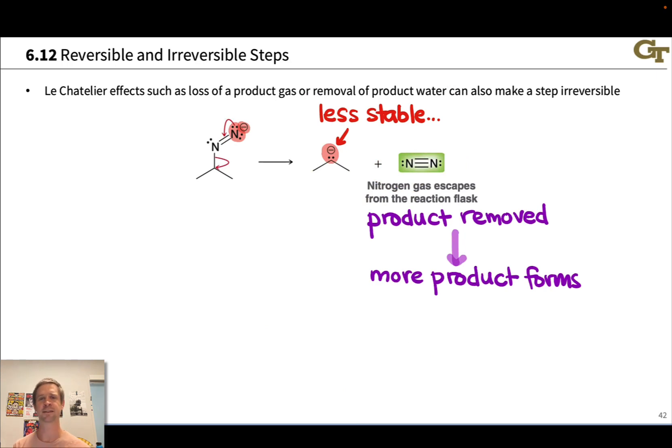So these Le Chatelier effects, typically involving loss of a gas like N2, carbon dioxide, something like this, can drive a reaction or a step in the forward direction and make it irreversible. Loss of a small molecule that forms a separate phase or is deliberately removed by something like distillation can also do this. And alcohols and water, which can be deliberately removed from reaction mixtures to pull otherwise reversible or unfavorable steps toward the product side.